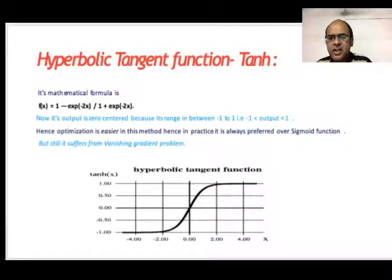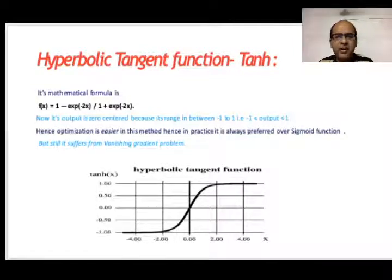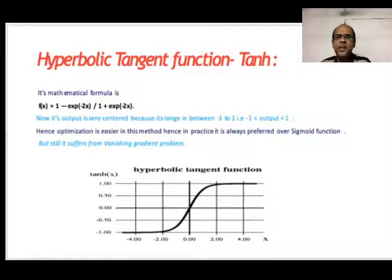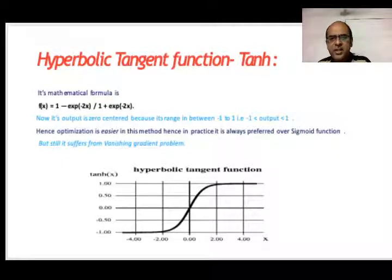The alternative to sigmoid is the hyperbolic tangent, otherwise called tanh. It has a range of −1 to 1, so the output can lie between −1 and 1. Optimization is easier with tanh, making it preferable over sigmoid. However, the problem of vanishing gradients still exists in the hyperbolic tangent.